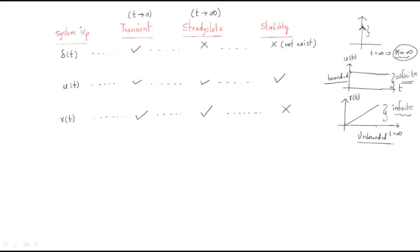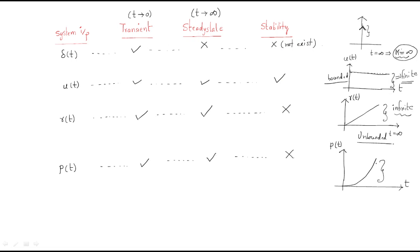What about the parabola? The parabola also consists of the transient state and the steady state, but it does not have stability. For the parabola, the magnitude increases to infinity — it is also an unbounded system. An unbounded system does not have stability; only a bounded system is stable.